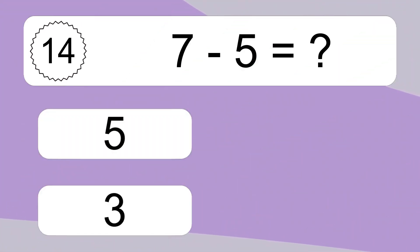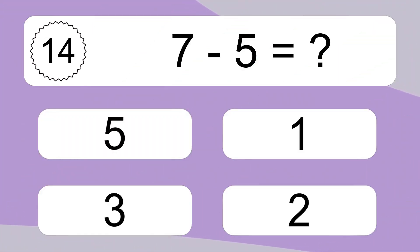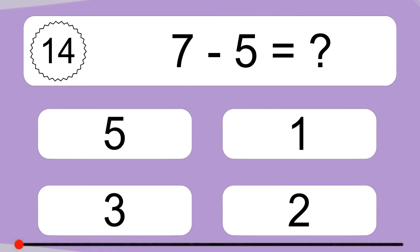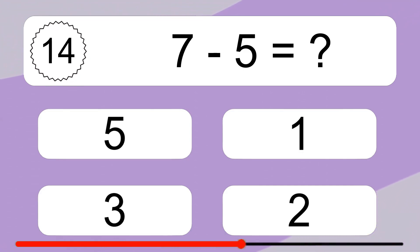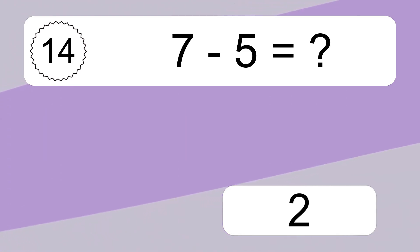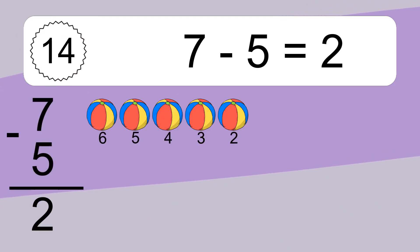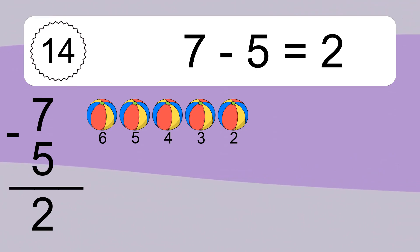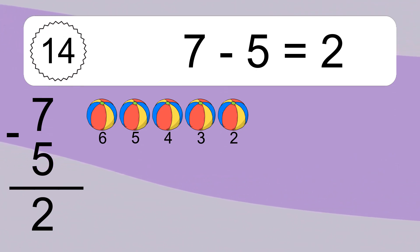7 minus 5 equals what? 7 minus 5 equals 2. Let's count it: 6, 5, 4, 3, 2.